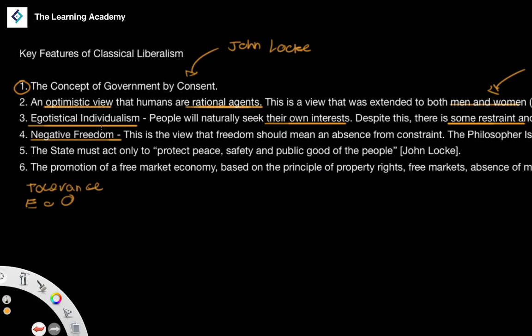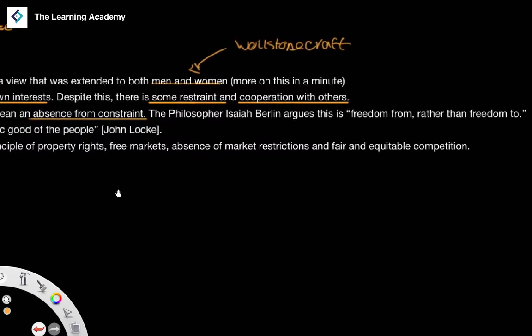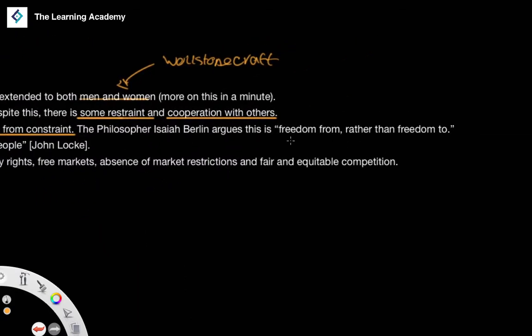Despite the tendency toward egotistical individualism, there is also a desire to place some restraint on individual interests in order to cooperate with others. We also have the concept of negative freedom — not just viewing freedom as the freedom to do something, but as an absence of constraint. Rather than positive freedom ('I am free to do this'), negative freedom means there is nothing stopping me. Isaiah Berlin argues that negative freedom is 'freedom from' — freedom from totalitarianism, dictatorship, monarchical authority — rather than 'freedom to' do something.